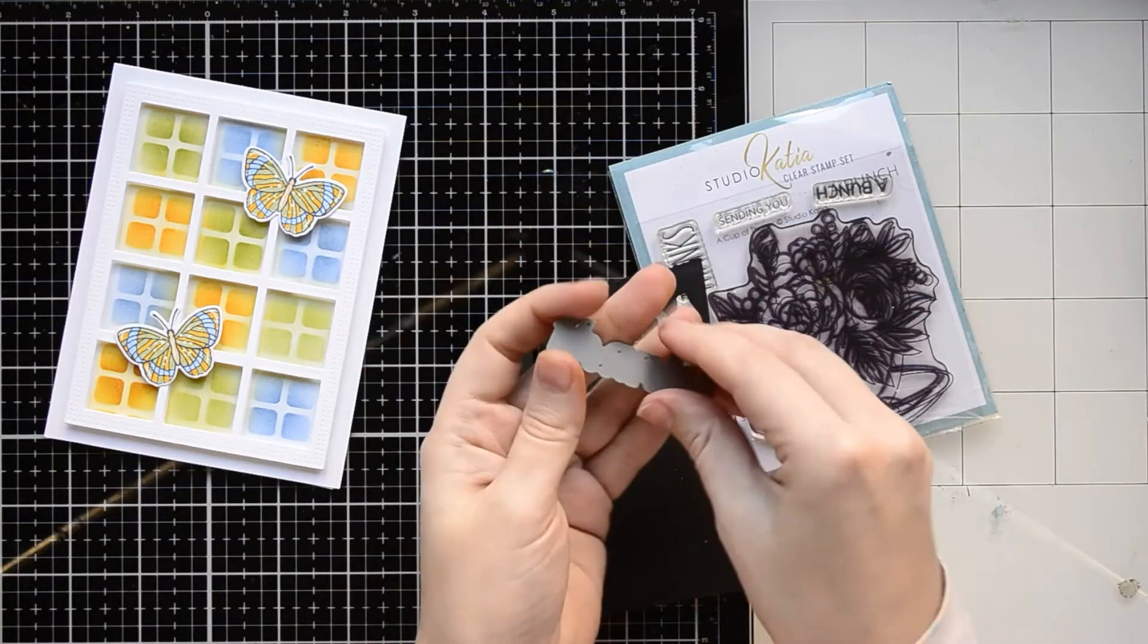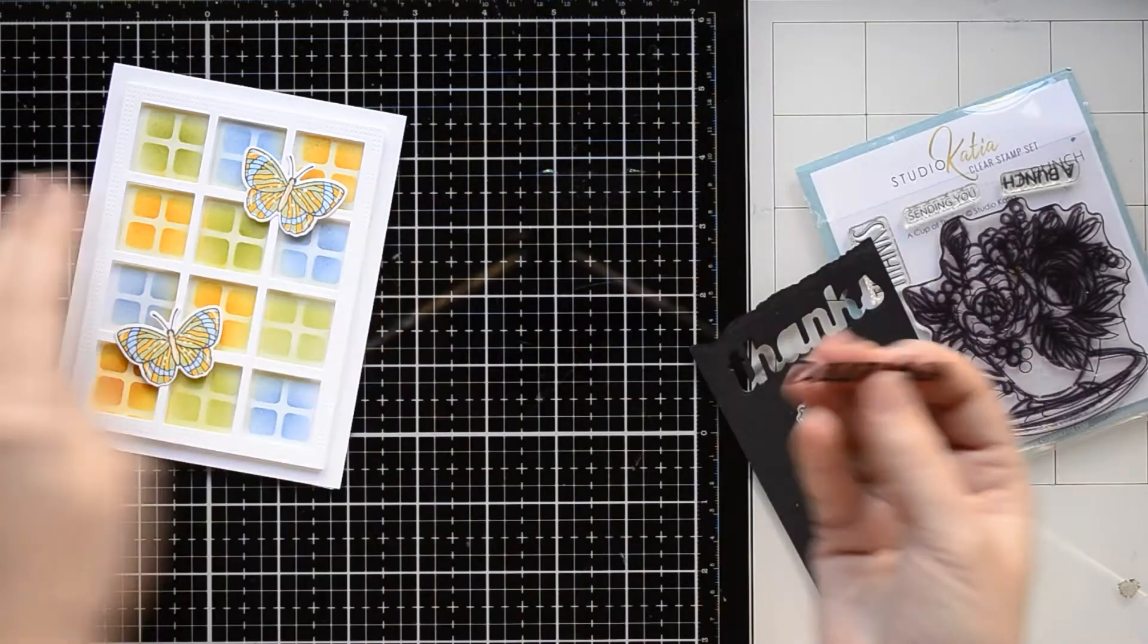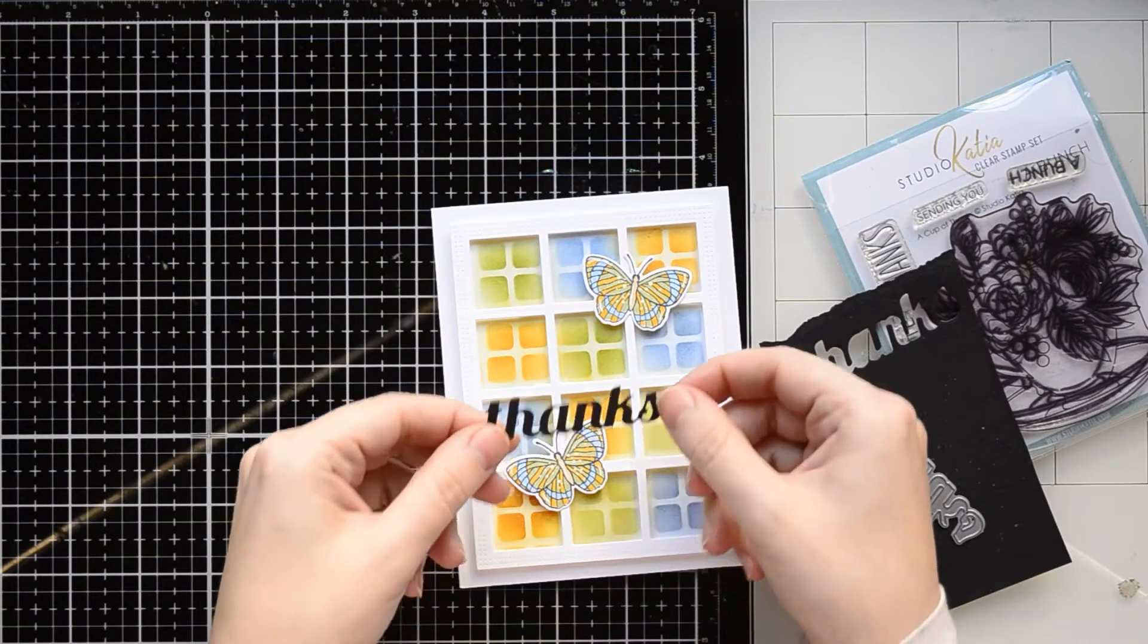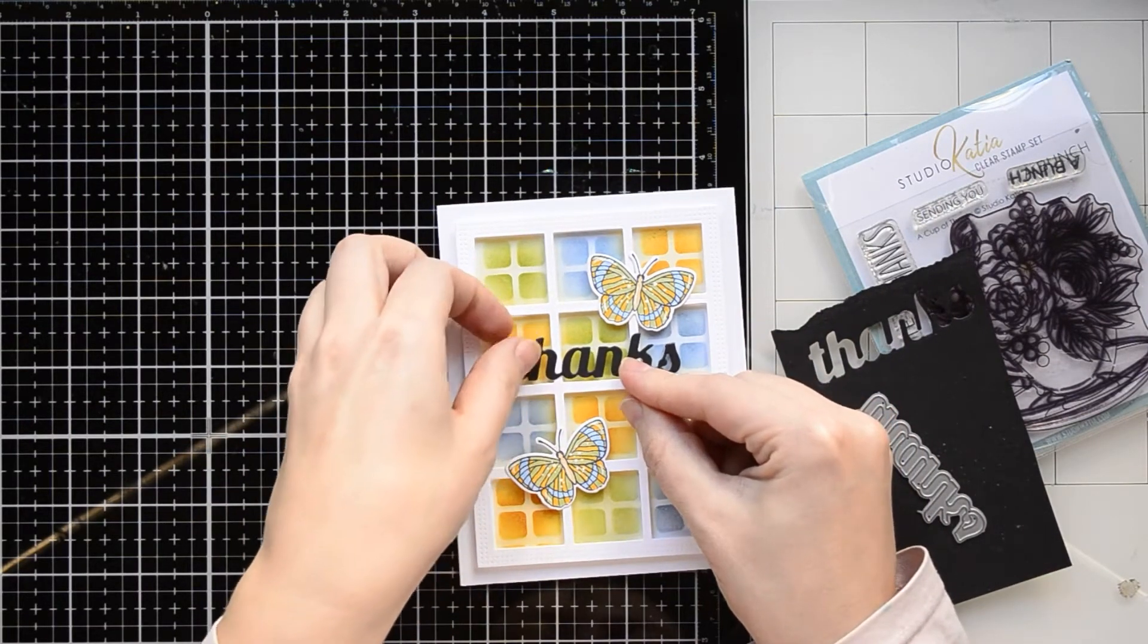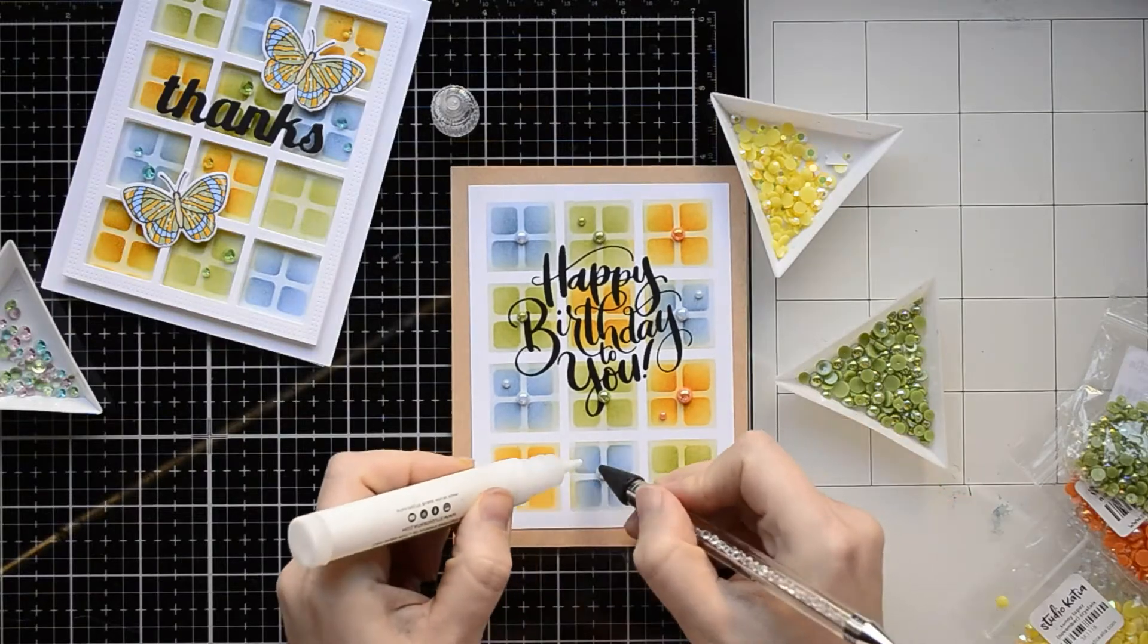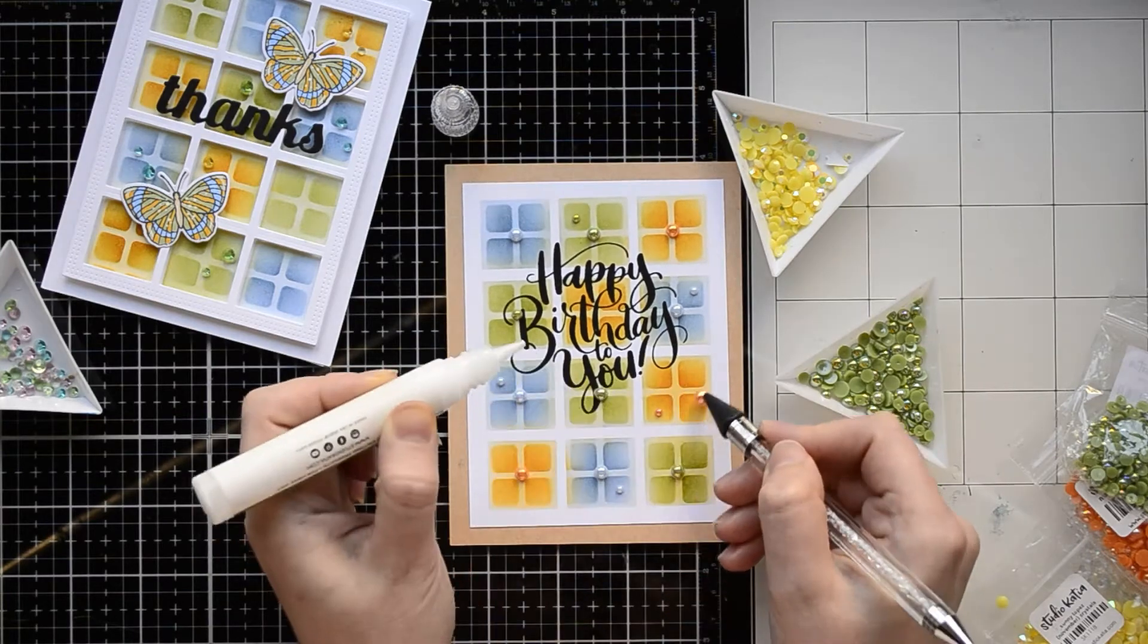I cut out those butterflies with coordinating dies. And for the sentiment I want to use this large die with the Thanks sentiment. It's a coordinating die set for a Cup of Thanks stamp set. I cut out the sentiment from black cardstock and I attach it on the top of my card.